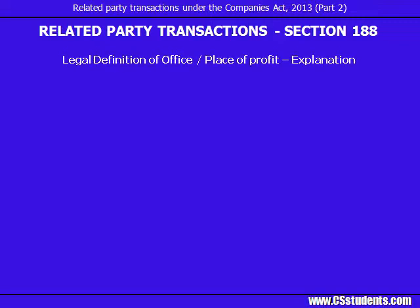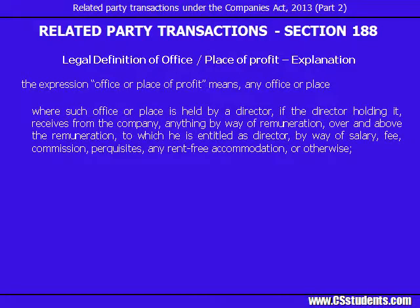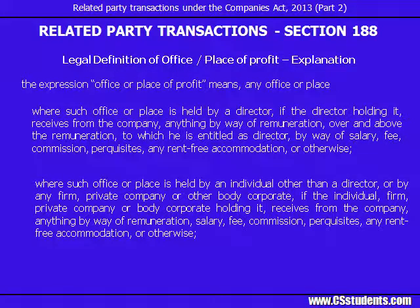The legal definition of 'office or place of profit' has been given in the explanation to Section 188. The explanation says: the expression 'office or place of profit' means any office or place — first, where such office or place is held by a director, if the director holding it receives from the company anything by way of remuneration over and above the remuneration to which he is entitled as director, by way of salary, fee, commission, perquisites, any rent-free accommodation, or otherwise; second, where such office or place is held by an individual other than a director, or by any firm, private company or other body corporate, if the individual, firm, private company or body corporate holding it receives from the company anything by way of remuneration, salary, fee, commission, perquisites, any rent-free accommodation, or otherwise.